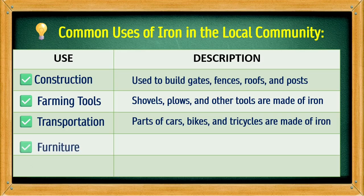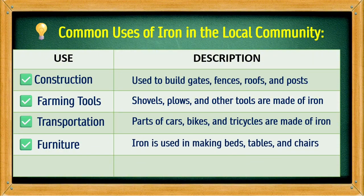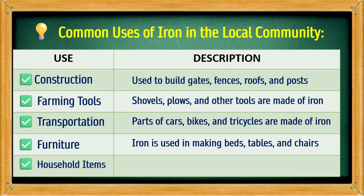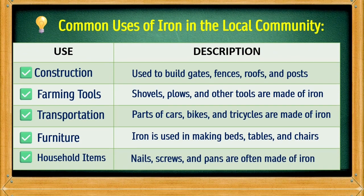Furniture — iron is used in making beds, tables, and chairs. Household items — nails, screws, and pans are often made of iron.